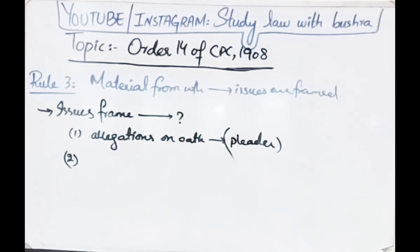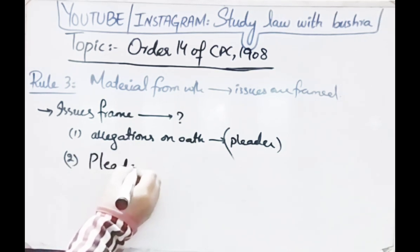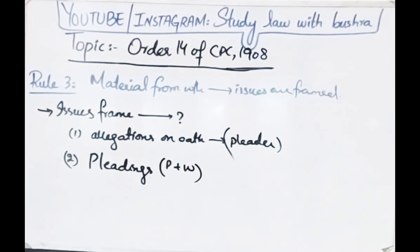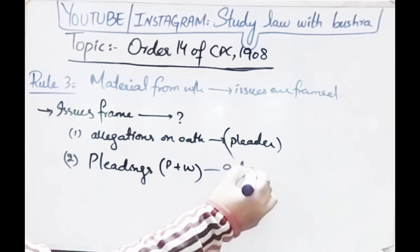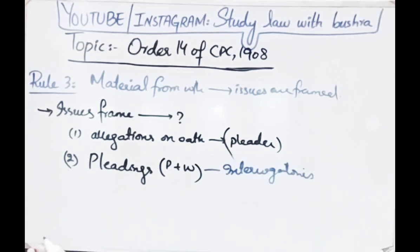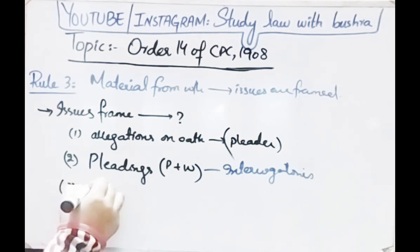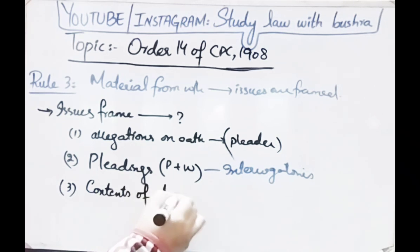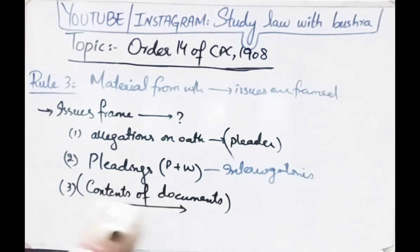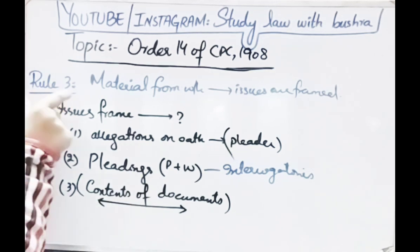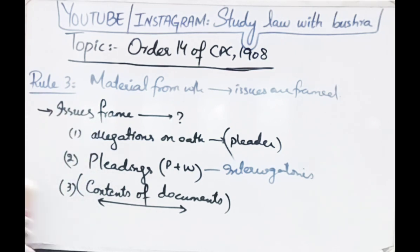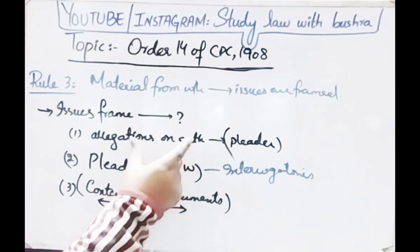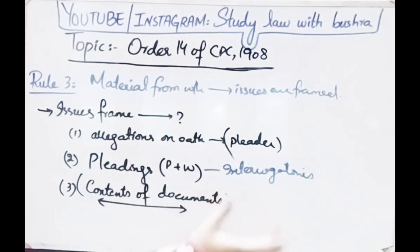Second, allegations made in the pleadings — that is, the plaint or written statement — or in answers to interrogatories delivered in the suit. Third, the contents of documents produced by either party. So Rule 3 explains the materials from which issues can be framed: sworn allegations, pleadings, interrogatories, or documents produced before the court.